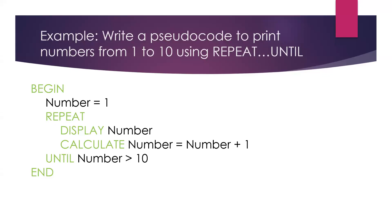Now let's look at repeat-until. In repeat-until the condition is at the end of the loop with 'until', and the loop repeats when the condition is false. We display the number: print 1, then 1 plus 1 is 2. Is 2 greater than 10? No — repeat. Continue until you print 10, then 10 plus 1 is 11. Is 11 greater than 10? Yes — exit. That's how repeat-until works.